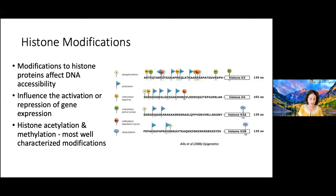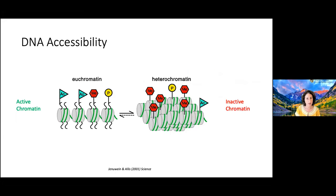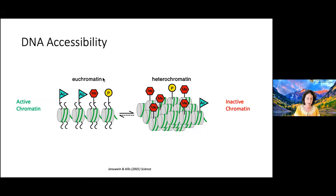Like DNA methylation, histone modifications can influence the activation or repression of gene expression, and this relates to DNA accessibility. Depending on these modifications, you can have more active chromatin where the DNA is more accessible, positively regulating gene expression, or you may have more heterochromatin — everything wound up more tightly — leading to inactive chromatin and downregulation of expression. This figure shows how histone modifications, similarly to DNA methylation, affect gene expression regulation through DNA accessibility.